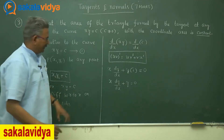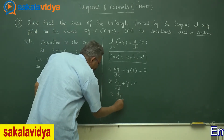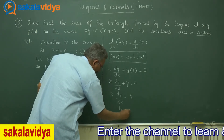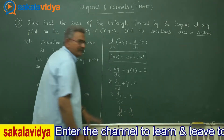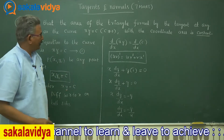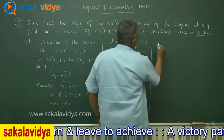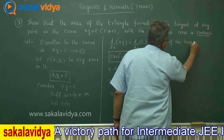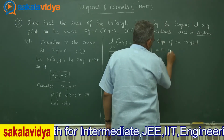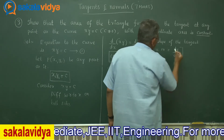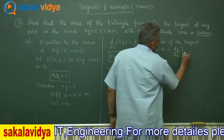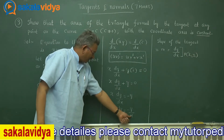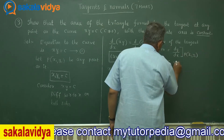Now we need to find dy/dx. So X·dy/dx equals minus Y, therefore dy/dx equals minus Y over X. Now, the slope of the tangent equals M equals dy/dx at the point P(x1, y1). Substituting x for x1 and y for y1, we get M equals minus y1 by x1.